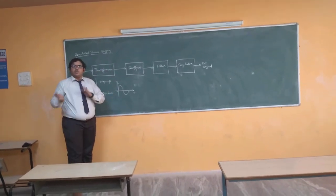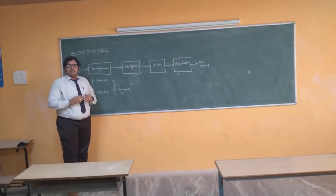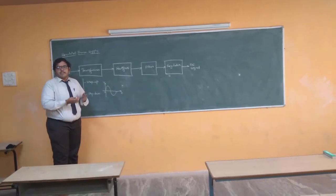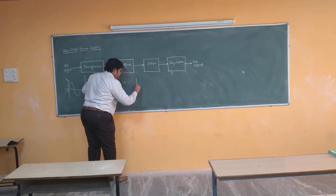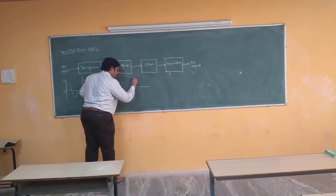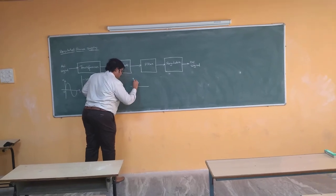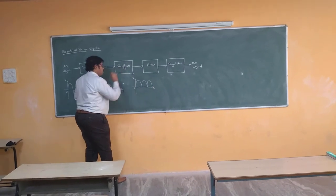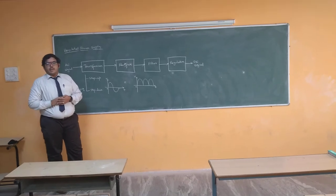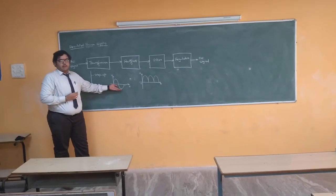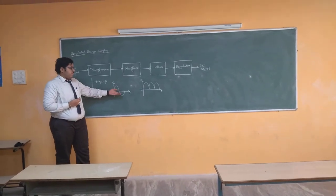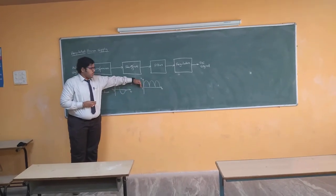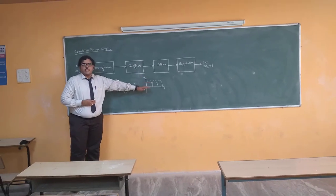We are not converting the complete signal into a DC form — we are only reducing some portions of the AC signal, so that in the later steps we can convert that particular signal into a complete DC. This is the output signal of a rectifier. We have a positive cycle as well as a negative cycle in an AC signal, but when this particular signal is given to a rectifier, it is converting into one of its portions — in this graph you only see the positive cycles, and all the negative cycles are being eliminated.